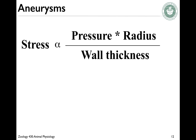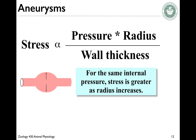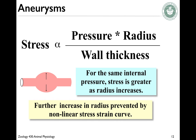It's interesting to think about what can go wrong — aneurysms. Stress is proportional to the pressure times the radius divided by wall thickness. For the same internal pressure, stress is greater as the radius increases. So the stress goes up and up, and further increases in radius are going to be prevented by a nonlinear stress-strain curve until it pops.